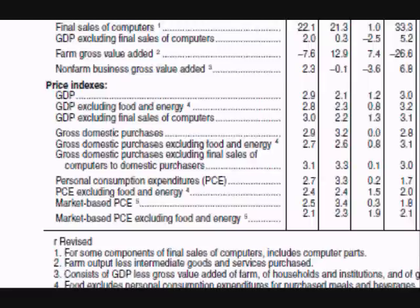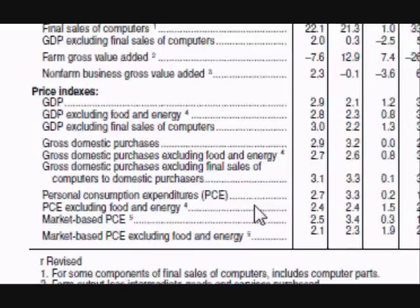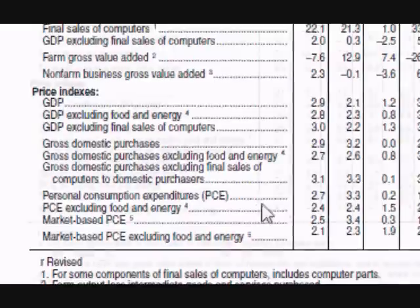Finally, there is a change in prices for personal consumption expenditures — the change in prices for all goods and services purchased by consumers. It excludes purchases by businesses and government. The next section, PCE minus food and energy, also known as core PCE, is the most important section in this table.